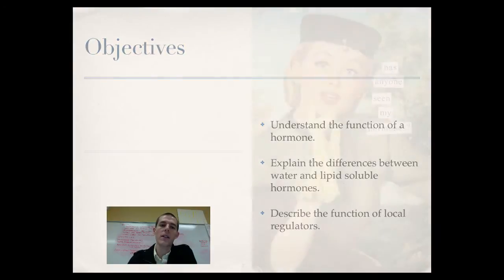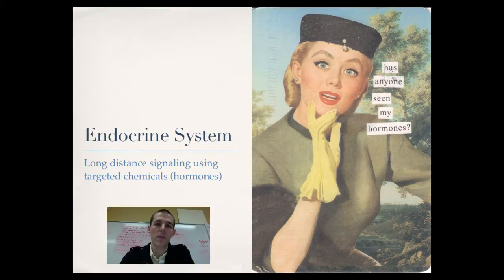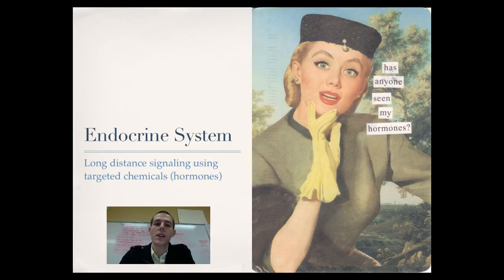Before we start talking about all that, let's start with a discussion of the endocrine system — basically, what is it? Essentially, the endocrine system is a system of long-distance signaling in the body, and it uses targeted chemicals called hormones. These targeted chemicals travel in the bloodstream. A lot of the regulation that happens in our body — growth, development, sexual reproduction — are all regulated by hormones. Endocrine organs secrete hormones into the bloodstream, and those hormones head off to specific cells where there are receptors to receive them, and then a response will be initiated in those cells.